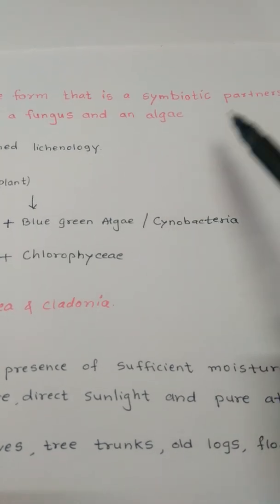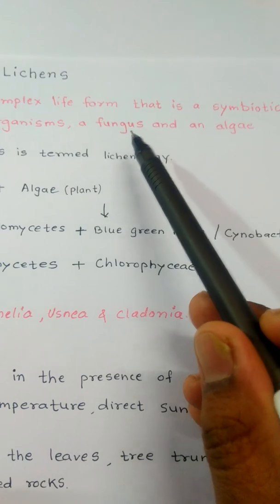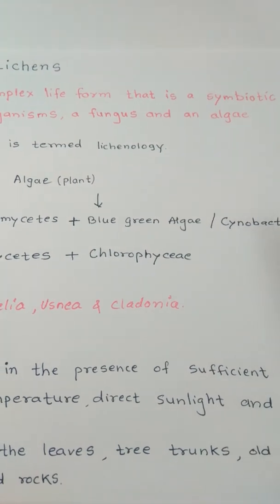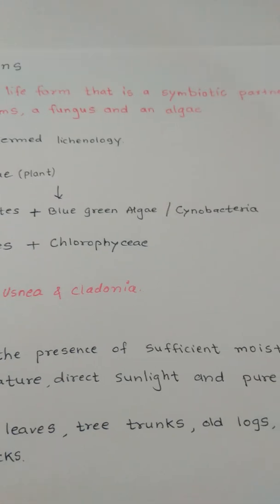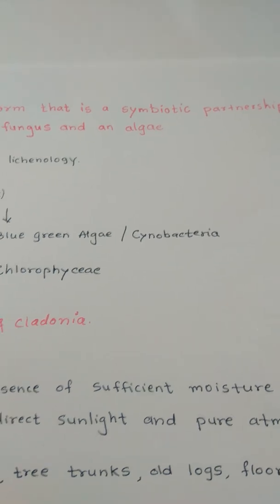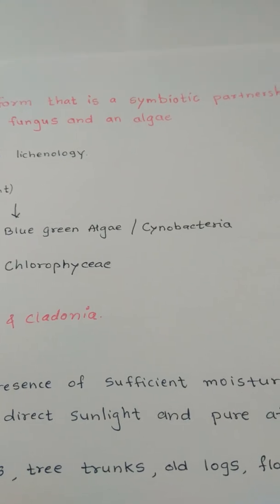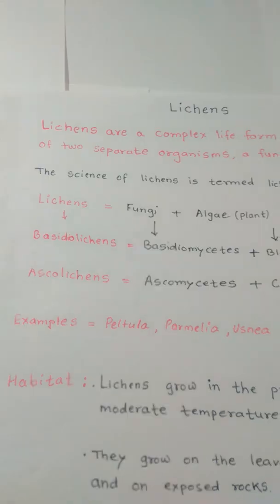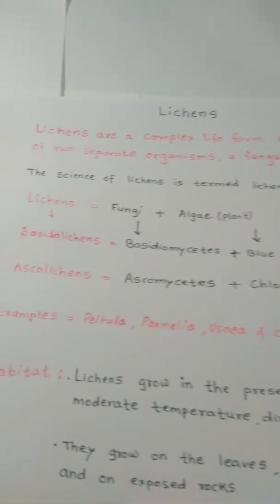Symbiotic partnership means both partners — Fungus partners and Algae partners — come together and exchange benefits with each other. This type of relationship is called a symbiotic partnership relationship, where both partners get benefited from each other. The science of Lichen is termed Lichenology.